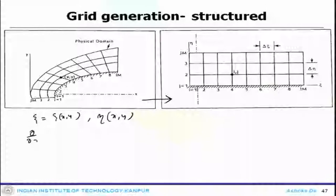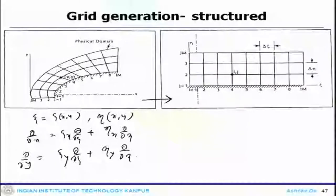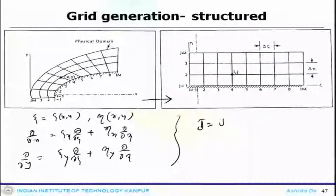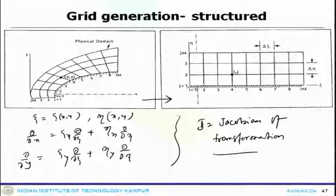So, del/del-x would be psi_x * del/del-psi + eta_x * del/del-eta, and similarly del/del-y would be psi_y * del/del-psi + eta_y * del/del-eta. Once you transform them, you end up getting a Jacobian of transformation. This we have actually discussed when we were talking about grid generation and transformation, or rather talking about PDEs.